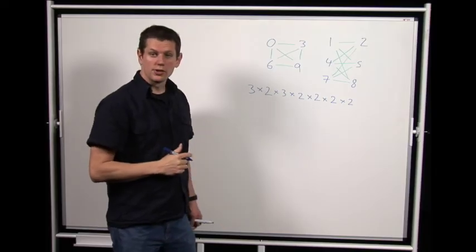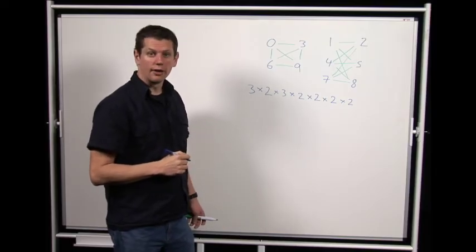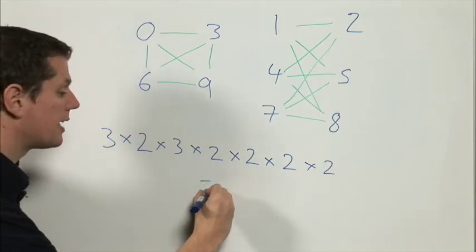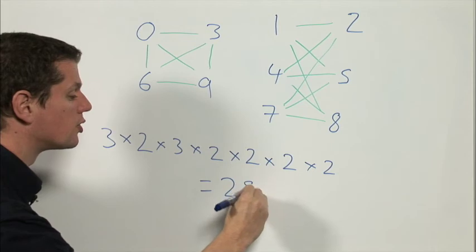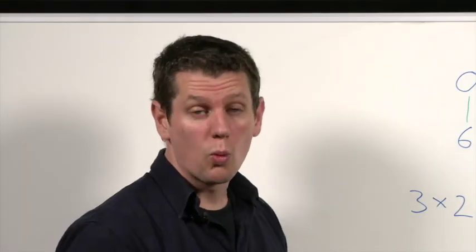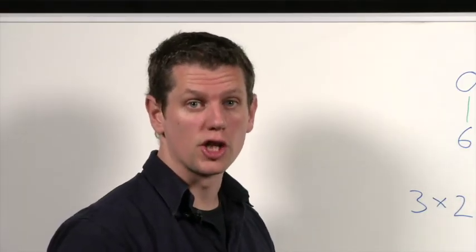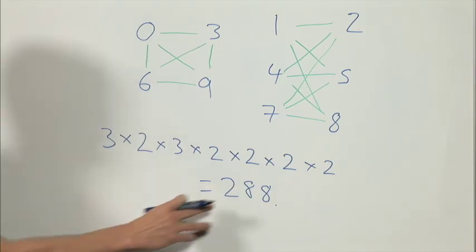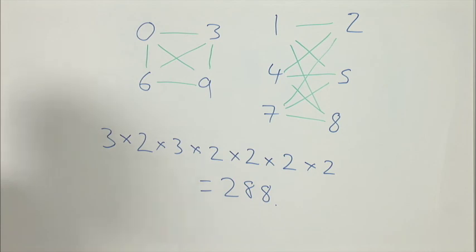Now, that's a multiplication sum that gives the number of ways of pairing off the digits to form two-digit numbers. And if we do our multiplication, that turns out to be 288. Now, once we've formed the five two-digit numbers, there's only one way of writing them down in increasing order. So this number, 288, is our final answer. Thank you.